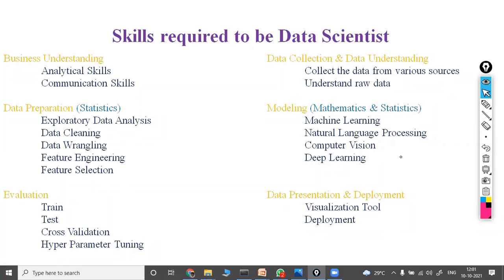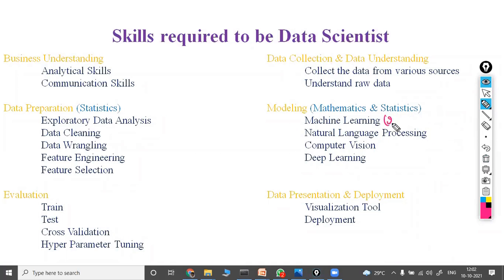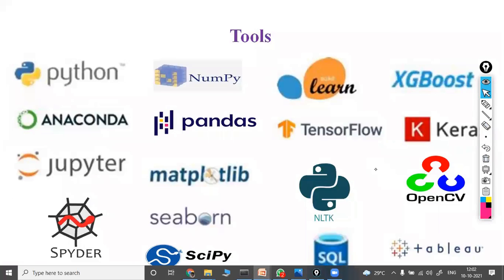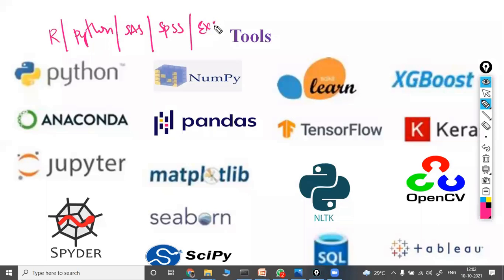For tools, you should be familiar with at least one programming language — either R, Python, SAS, SPSS, or Excel. Excel is limited to 1 million rows and cannot handle more. SPSS, developed by IBM, only works with structured tabular data — it won't work with images, audio, or text documents. SAS also only works with structured data and is a paid software. That leaves R and Python, both of which are free.